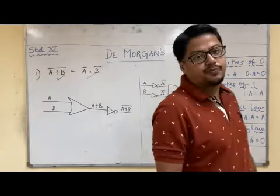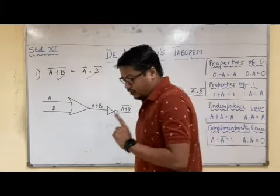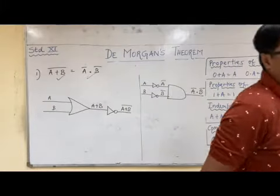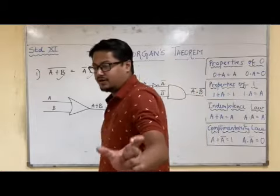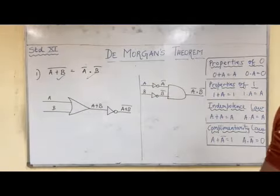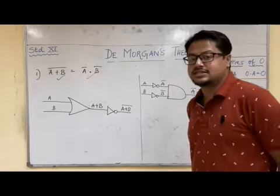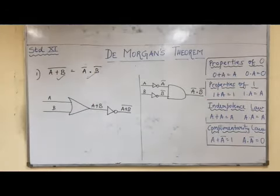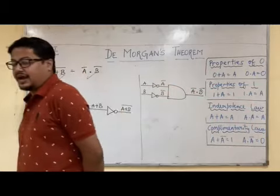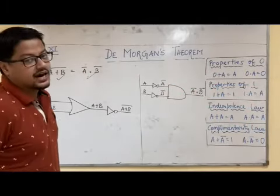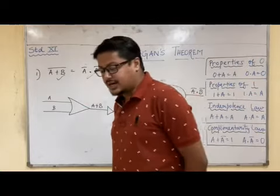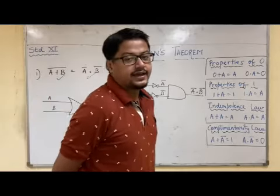So by this we come to the end of the proof of the first De Morgan's theorem. We had three proofs: numerical proof (the largest and somewhat most difficult), truth table proof (easy once you understand the logic), and circuit diagram proof. The second De Morgan's theorem we will prove when we meet in class, as both proofs are very similar. Each proof is worth at least 4 or 5 marks. This also concludes chapter number 2 — data representation and Boolean logic. Next time we will start with Python. Thank you and have a nice day.